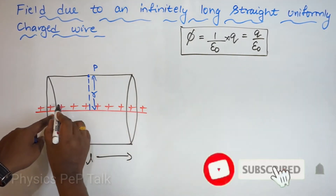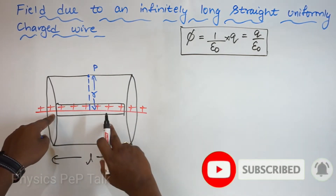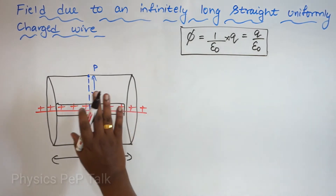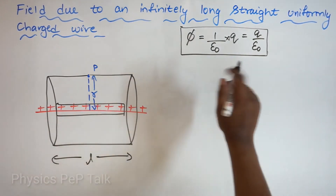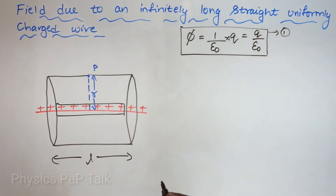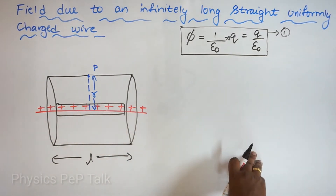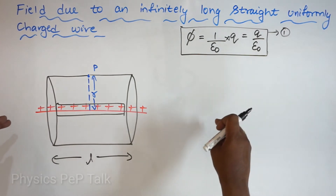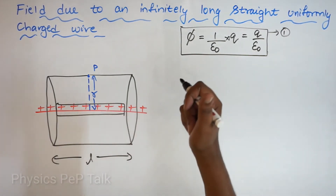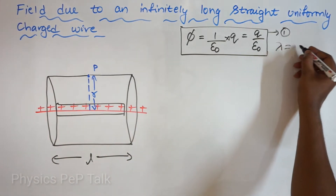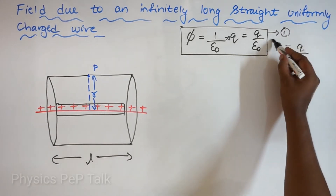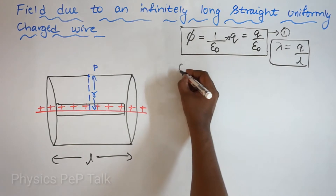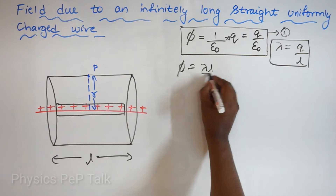The charge within the cylinder acts as the charge enclosed in the system. This is Gauss law — I will consider this as equation 1. What do you mean by linear charge density? It is charge per unit length, given by lambda which equals Q by L. So Q is nothing but lambda times L. I will substitute this into equation 1, replacing Q to get total electric flux equal to lambda L by epsilon naught.